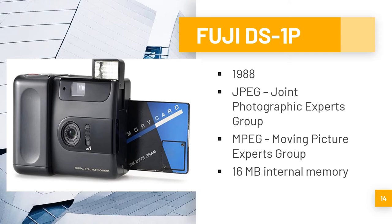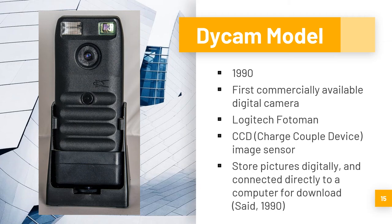In 1990, the DCAM model became the first commercially available digital camera, also sold as the Logitech Photoman. It used a CCD image sensor, stored pictures digitally, and connected directly to a computer for download.